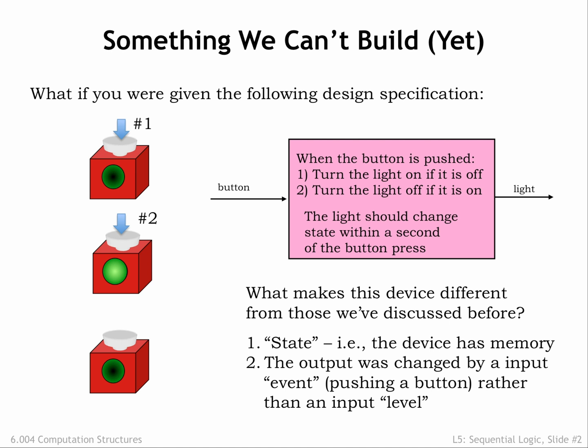The device's internal state is what allows it to produce different outputs even though it receives the same input. A combinational device can't exhibit this behavior since its outputs depend only on the current values of the input. Let's see how we'll incorporate the notion of device state into our circuitry.